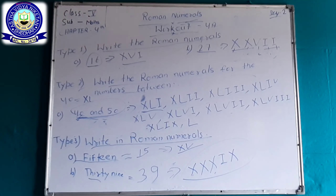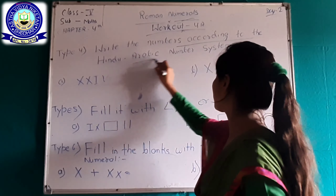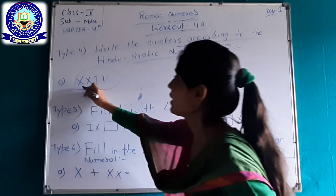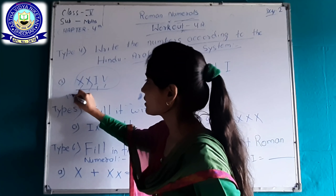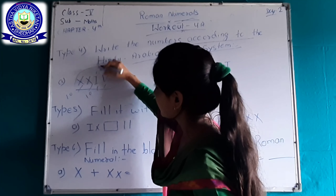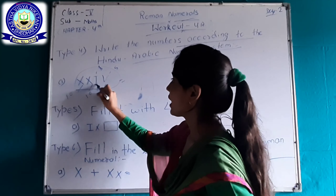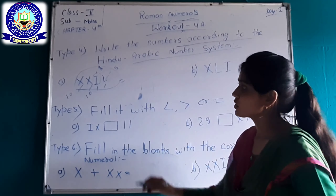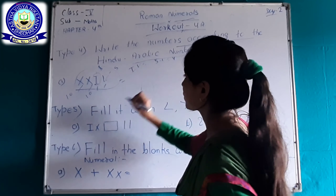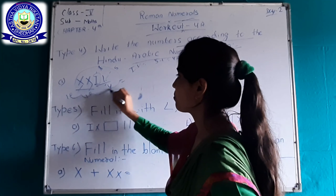Your type 4 question: write the numbers according to the Hindu-Arabic number system. Here is the Roman numeral XXIV. X means 10, this X means 10, I for 1 and V for 5. Since I appears just before the larger numeral V, it is subtracted: IV equals 5 minus 1, which equals 4. So 10 plus 10 plus 4, we get 24. The Hindu-Arabic value of XXIV equals 24.